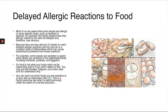Delayed allergic reactions to food are also important. Many people know about food allergies, but few know that allergic reactions can also be delayed and less obvious. Because they're harder to catch, you may be in a constant state of inflammation, which can cause autoimmune problems. For example, some people are sensitive to gluten, while others are sensitive to the nightshade family including tomatoes, potatoes, and eggplant. You can work out which foods you're sensitive to with an elimination diet — restricting certain foods for a period of time, then slowly reintroducing them and monitoring how you feel. This is best performed under the watch of a trained physician.